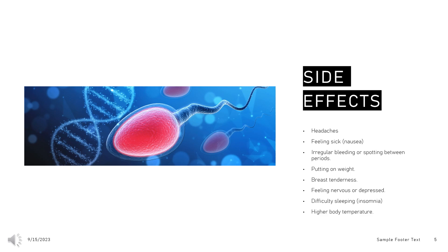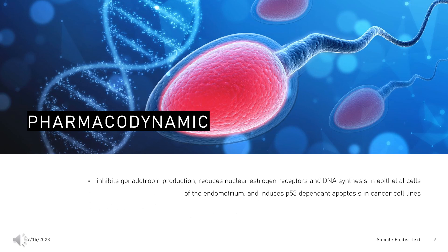Higher body temperature. Pharmacodynamics: Medroxyprogesterone acetate (MPA) inhibits gonadotropin production, reduces nuclear estrogen receptors and DNA synthesis in epithelial cells of the endometrium, and induces P53-dependent apoptosis in cancer cell lines. MPA oral tablets have a half-life of 40–60 hours and other formulations can have half-lives that are considerably longer, so the duration of action is long. The therapeutic window is wide as patients may take doses ranging from 5 mg orally daily to 1,000 mg as a depot injection weekly. Long-term use of MPA is associated with a reduction in bone density, and patients who take MPA during adolescence may have lower peak bone mass than untreated patients, which can also increase the risk of osteoporosis and fractures in the future.